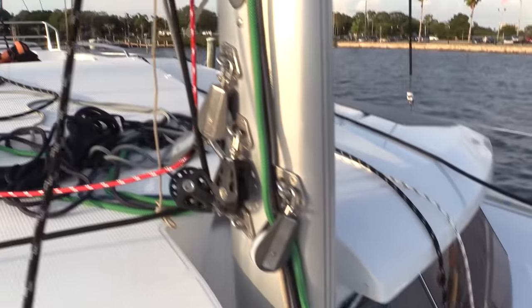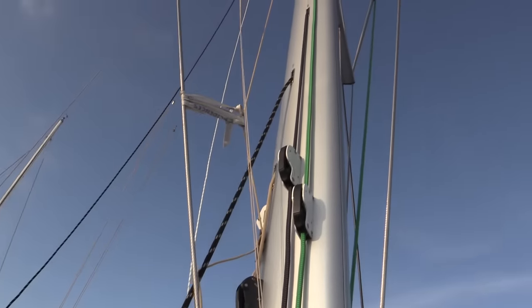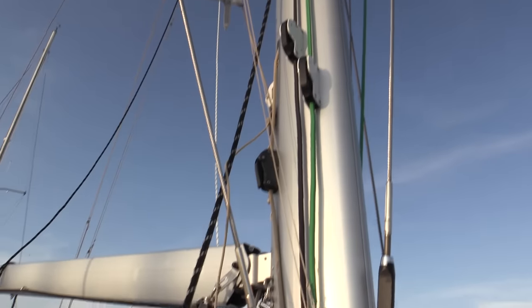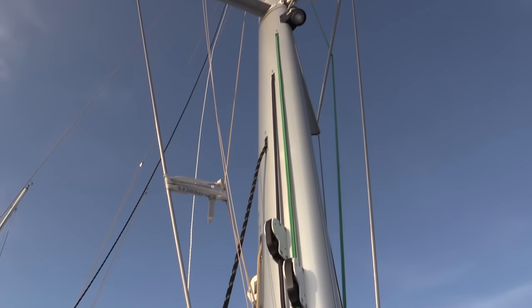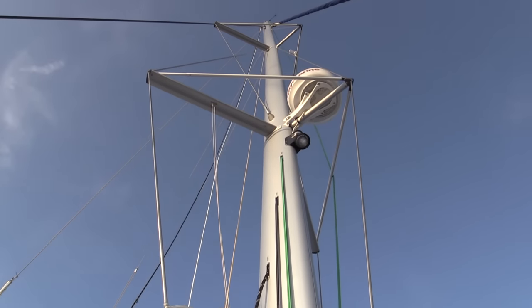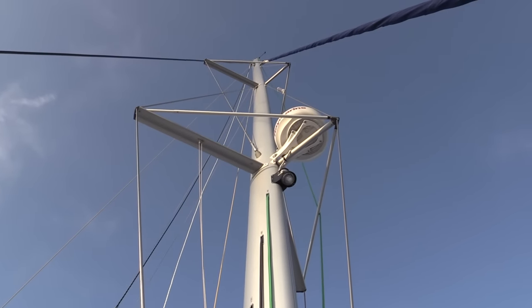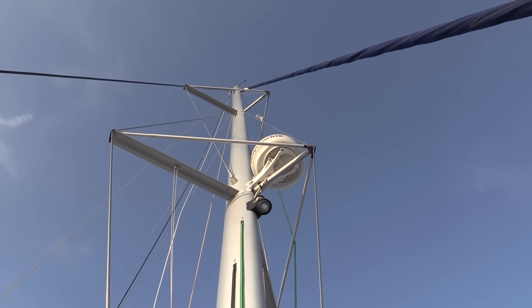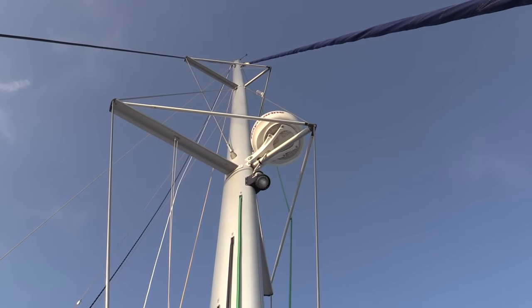Next, what we've got to do is pull on the free end of the line, bringing it out of the mast, which will pull the old halyard all the way out and should hopefully run the new line all the way through, no problem. So we've already got the new halyard up there attached to the top of the mast. So once we run this through, that will be everything.